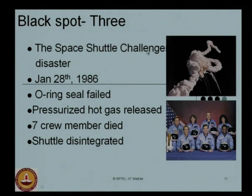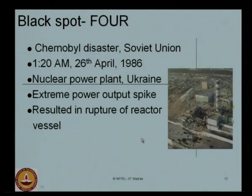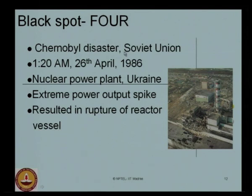The failure actually occurred because of an O-ring seal that failed and the release of pressurized hot gas. My dear friends, look at the photograph of the seven crew members who had been travelling in the space shuttle. The space shuttle got disintegrated and none of them are alive now. Black spot number four: the Chernobyl disaster, Soviet Union, occurred on 26 April 1986 in the early morning. It is actually a failure or partial failure of a nuclear power plant in Ukraine. The failure occurred because of an extreme power output spike, which resulted in the rupture of one of the reactor vessels.